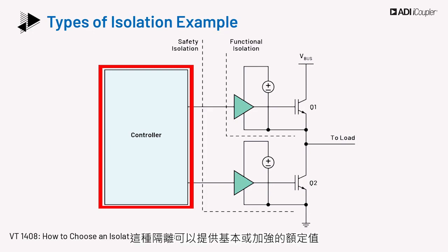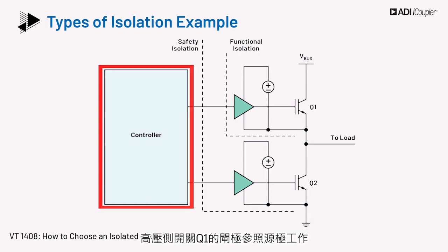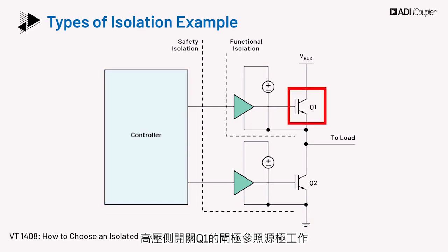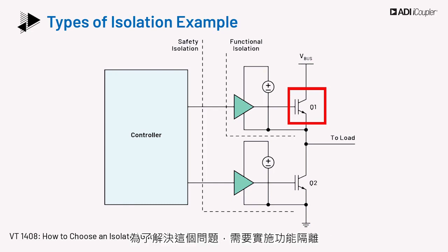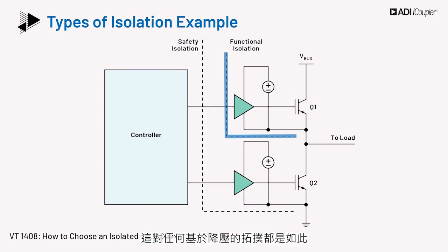So it's imperative to keep them away from the high voltage side. This isolation may have a basic or reinforced rating. For correct operation of the circuit, the high side switch Q1 should have its gate operating with reference to the source, which is not at ground potential. This poses some challenges, and to address this, functional isolation is required. This is true for any buck-derived topology, and is employed in converter and inverter systems.